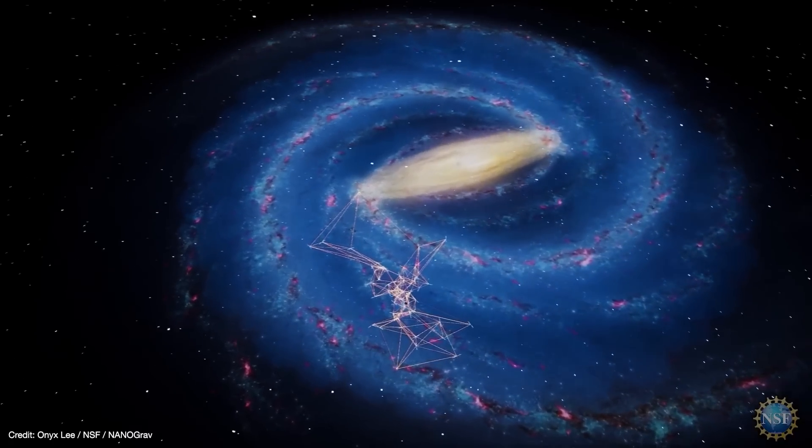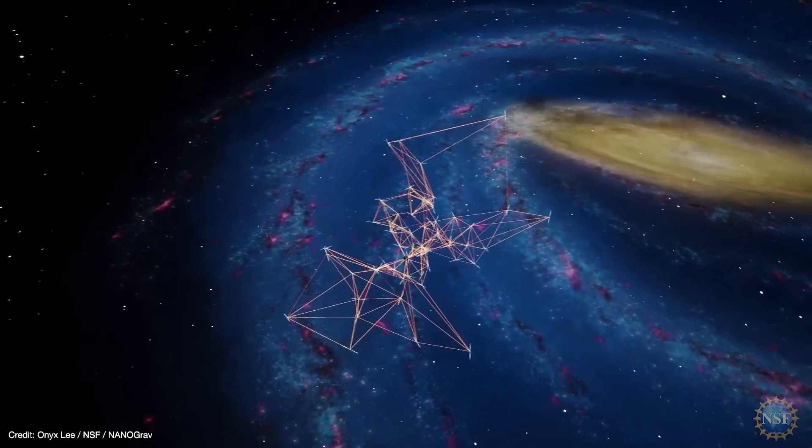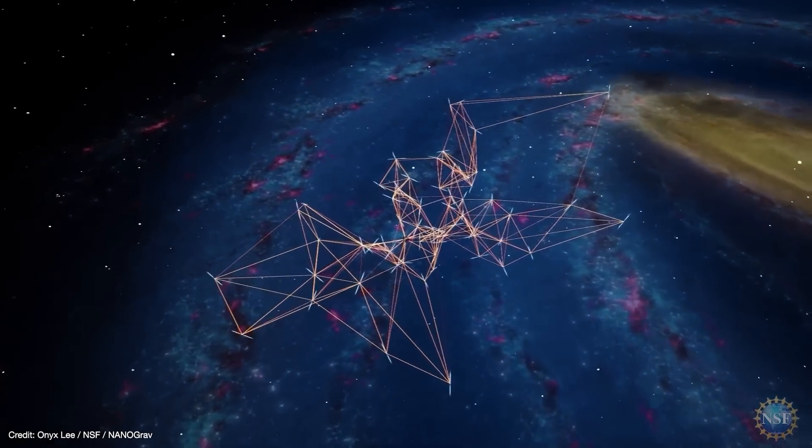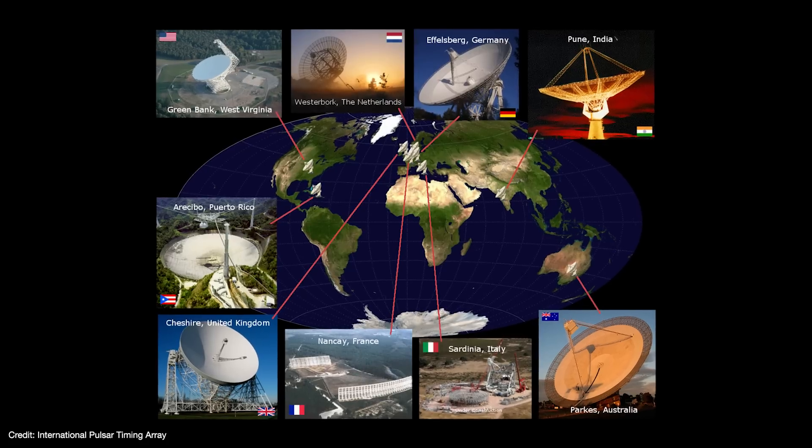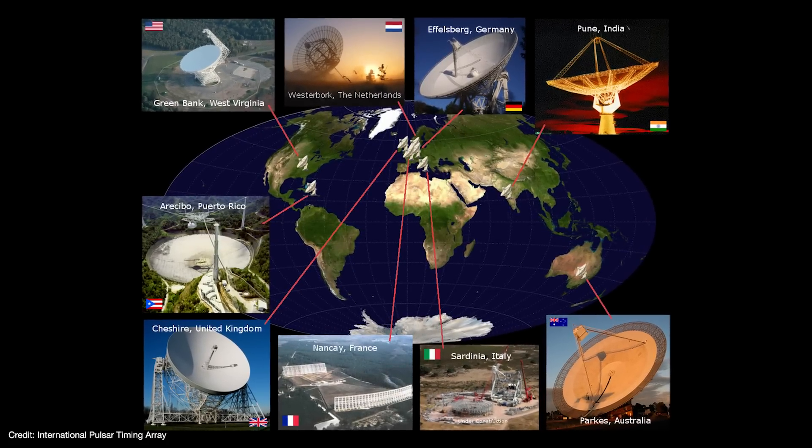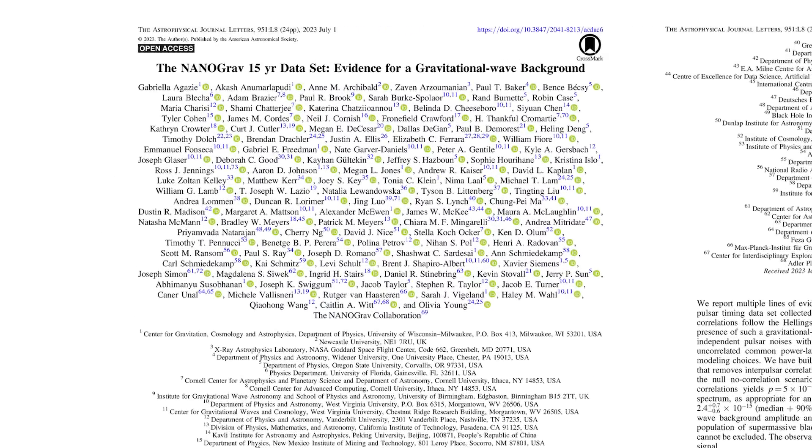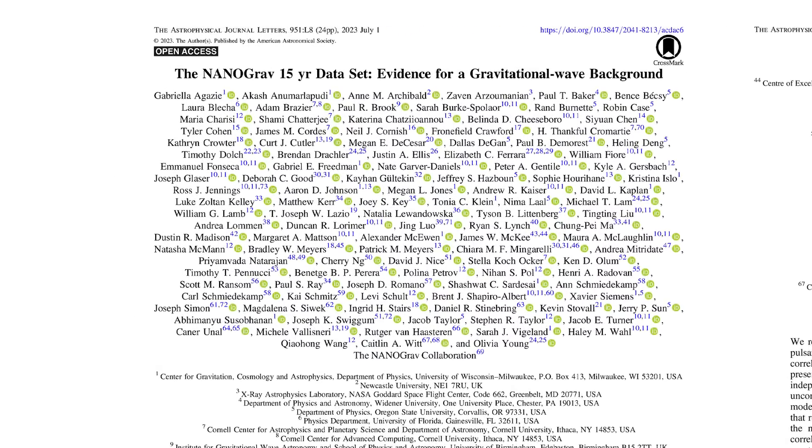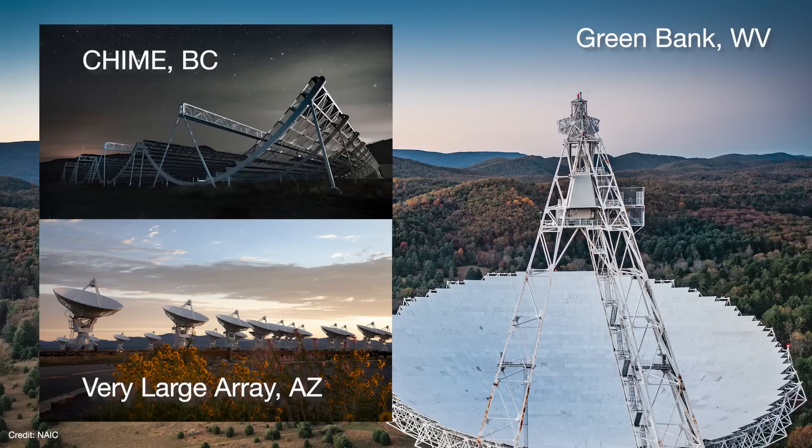So to overcome some of those errors, you monitor the signals from several different pulsars spread about the sky. This is called a pulsar timing array. To that end, different collaborations around the world monitor different PTAs for something like the last 20 years or so. So the North American Nanohertz Observatory for Gravitational Waves, or Nanograv, used the Arecibo Radio Telescope in Puerto Rico, and they still use the Green Bank, the Very Large Array, and Chime Telescopes today.